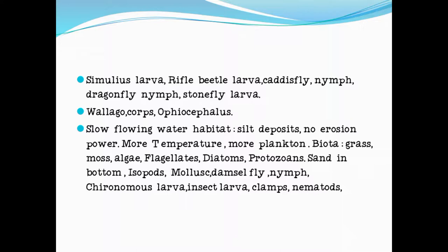Next is the slow flowing water habitat. Silt deposits take place in slow flowing water habitat; no erosion power is present in this zone. Temperature is more. Zooplankton are present. Grass is present, moss present, algae is present, flagellates are present, diatoms are present, protozoans present, and sand is present at the bottom.